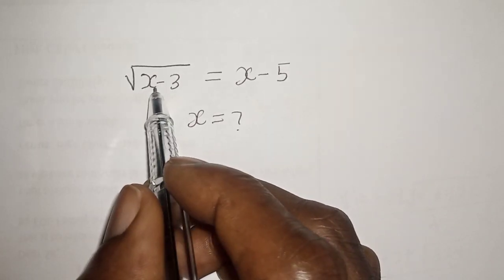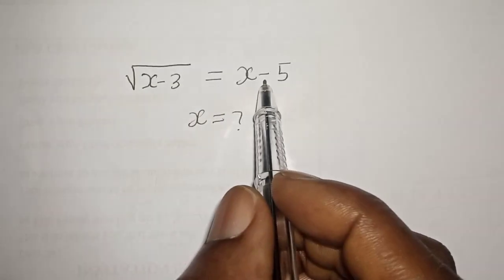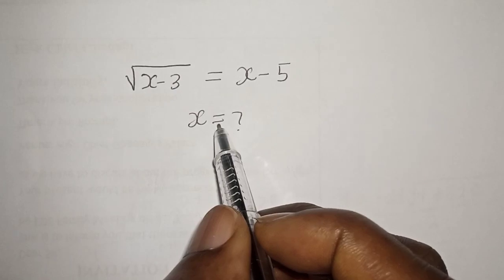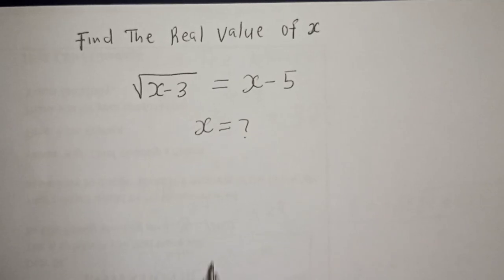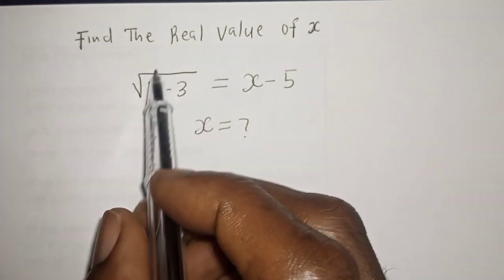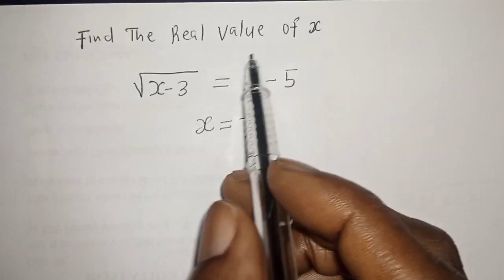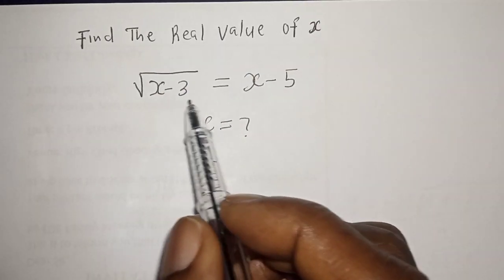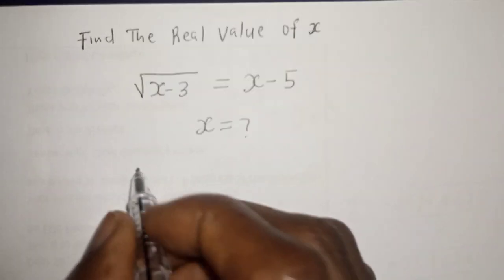Find the real value of S. The square root of S minus 3 is equal to S minus 5. Solution.